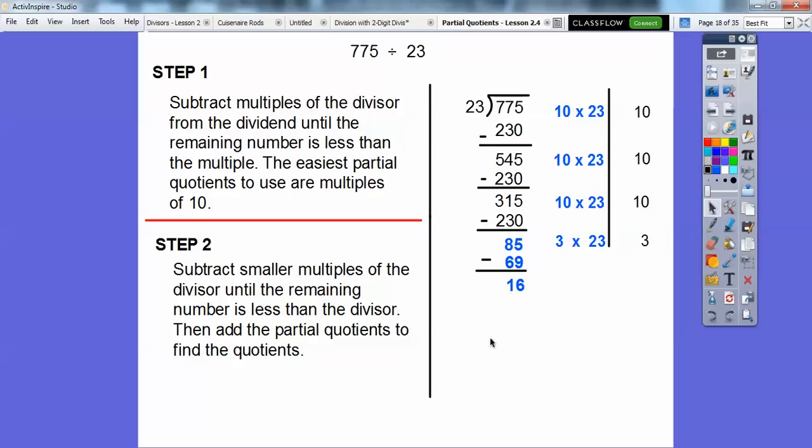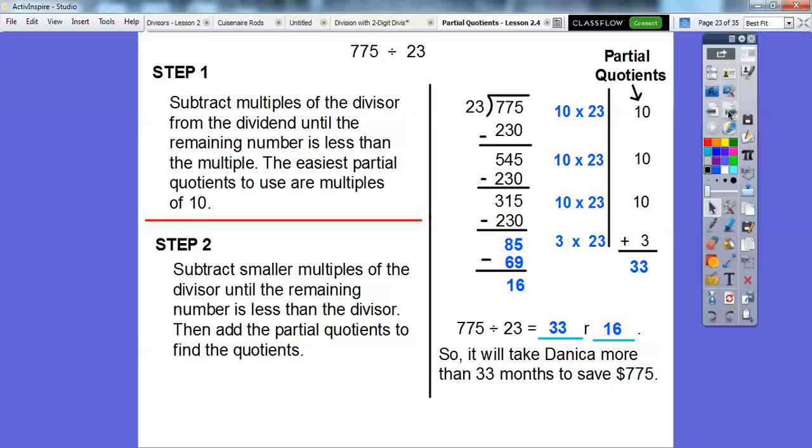Now we're going to add the partial quotients to find the quotient. These are the partial quotients to find the quotient. And this is the remainder because we can't get any more 23s into this 16 right here. So we know that's going to be the remainder. Let's go ahead and add those. We get 33. So 775 divided by 23 is going to be those partial quotients plus the remainder. So 33 with the remainder of 16. It will take Danica more than 33 months to save that $775.